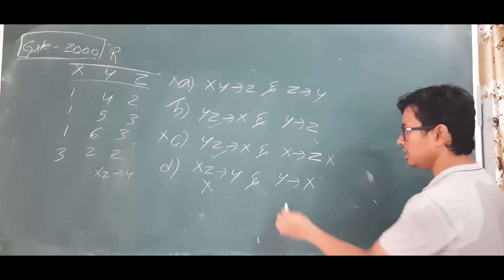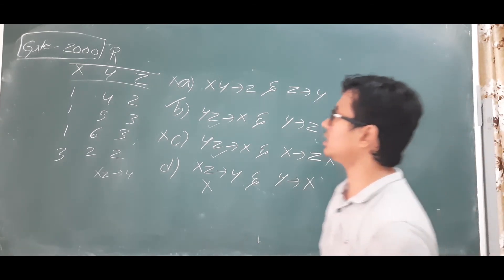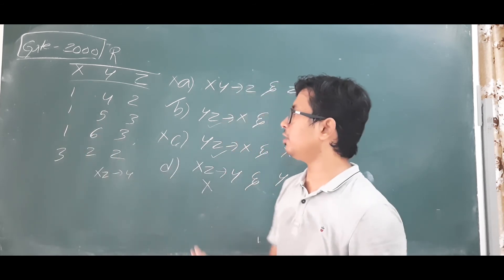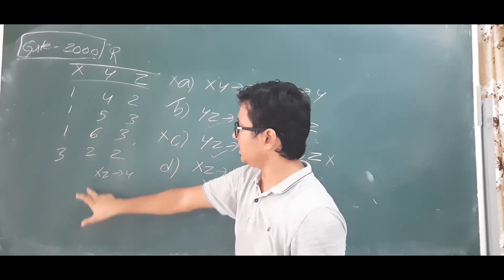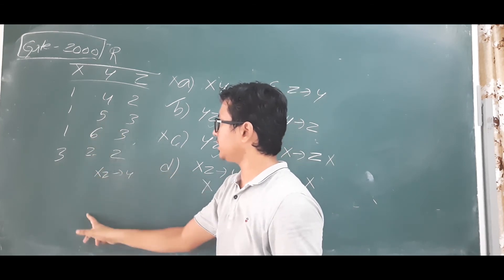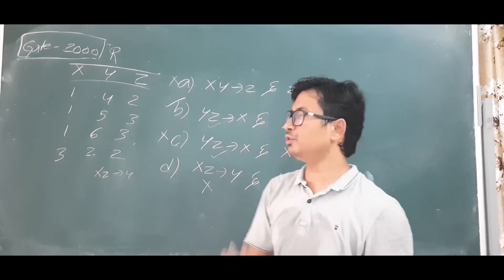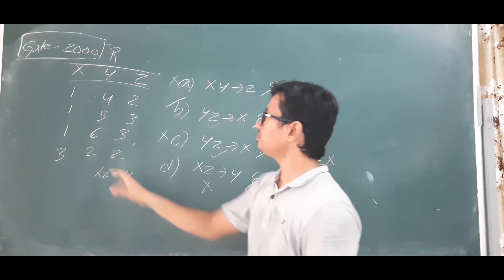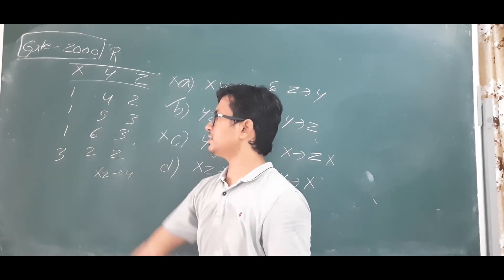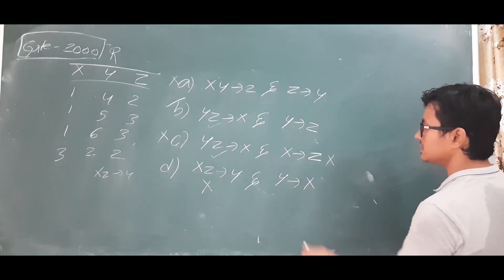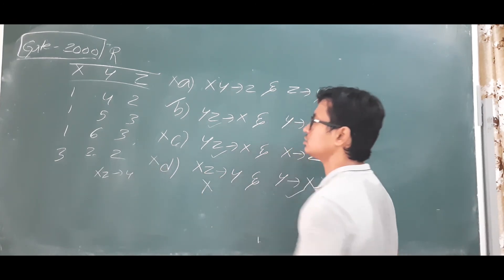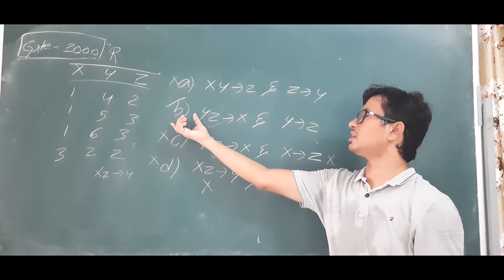Now let's check Y determines X. For Y=4, it gives X=1 — is 4 repeating in Y? No, so unique output 1. For Y=5, not repeating, unique output 1. For Y=6, single output 1. For Y=2, single output 3. So Y determines X is valid. However, since XZ→Y is not valid, option D is not correct.